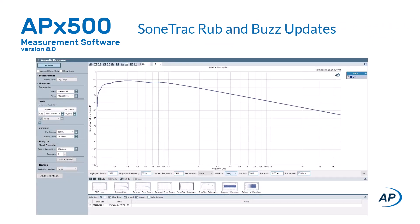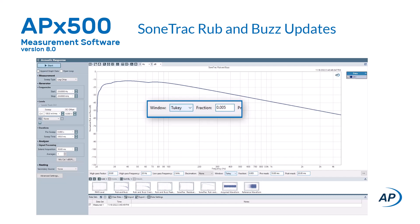For rub and buzz, additional windowing controls have been added for the sone track rub and buzz result, so the result can be tuned to account for and exclude transient-induced effects that are not caused by actual rub and buzz in the device under test. Two windowing options are now offered: Tuki and Hanning. Tuki scales to the length of the signal and windows out the beginning and end of the sweep.